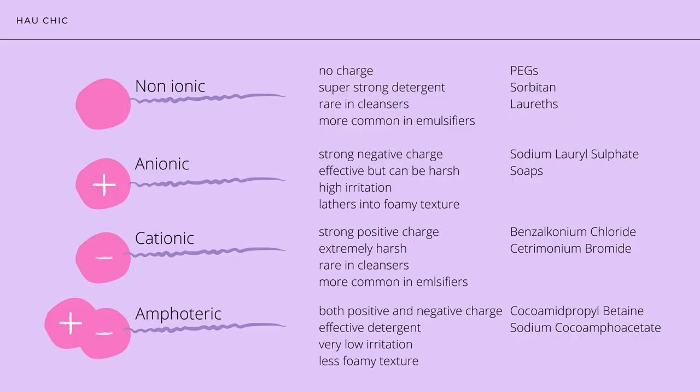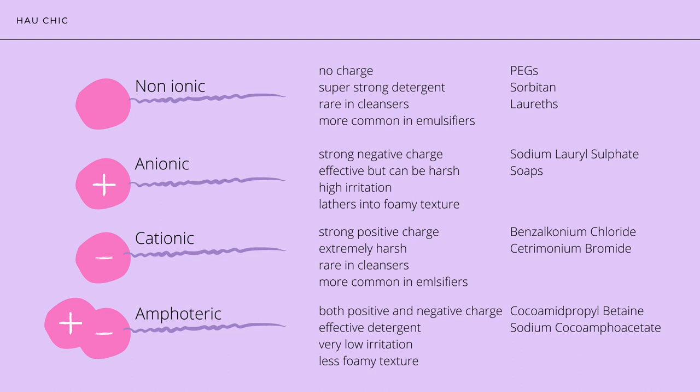Then we have cationic surfactants, which have a strong positive charge. These are extremely harsh and very rare in cleansers — more common in emulsifiers. I rarely see these in skincare anymore; most ingredients used in emulsifying cleansing oils are actually non-ionic. Then we have amphoteric surfactants, which have both positive and negative charge. These are very effective detergents with very low irritation, but they don't have as much foamy texture as the anionic type. Examples include cocamidopropyl betaine and sodium cocoamphoacetate.